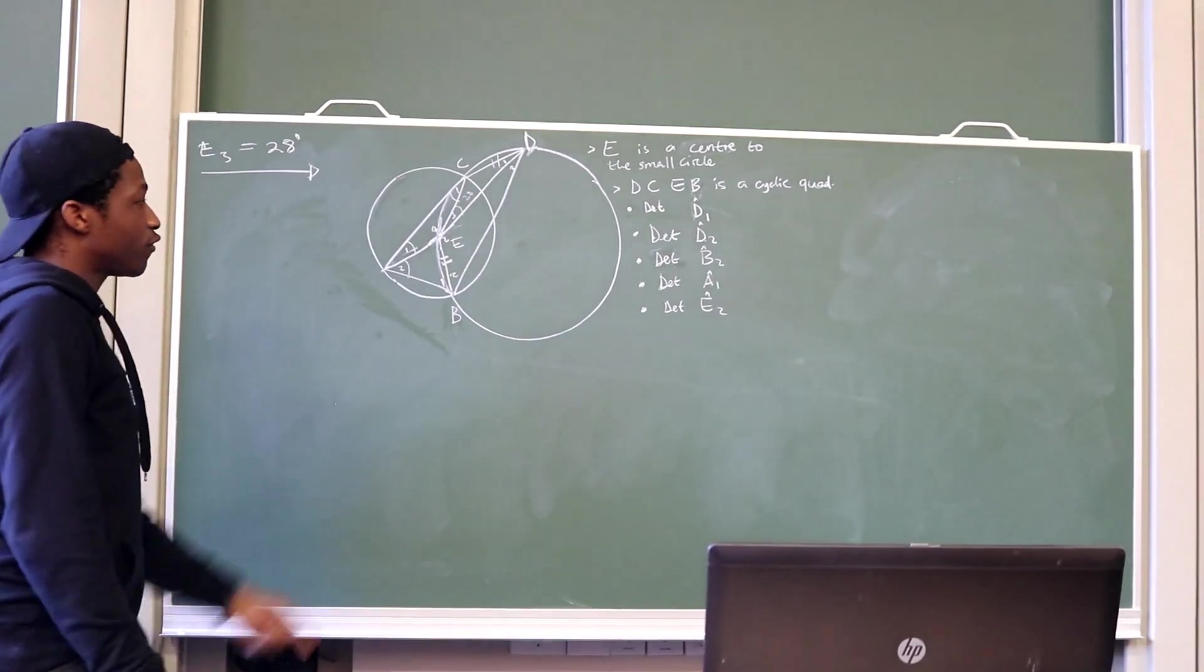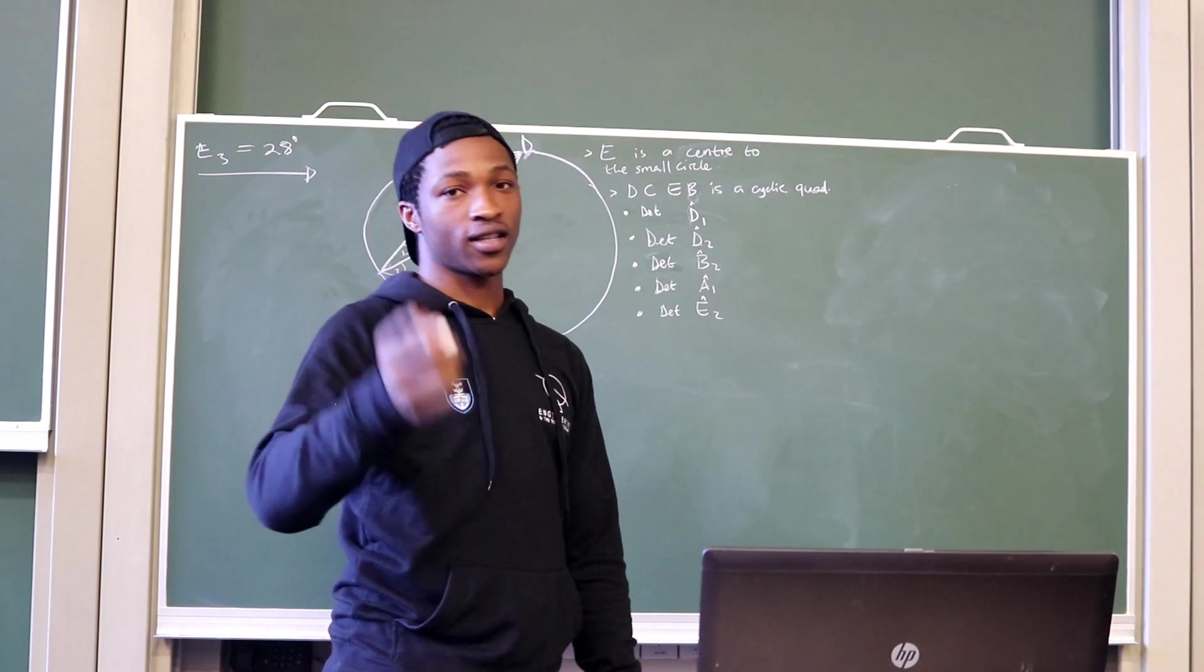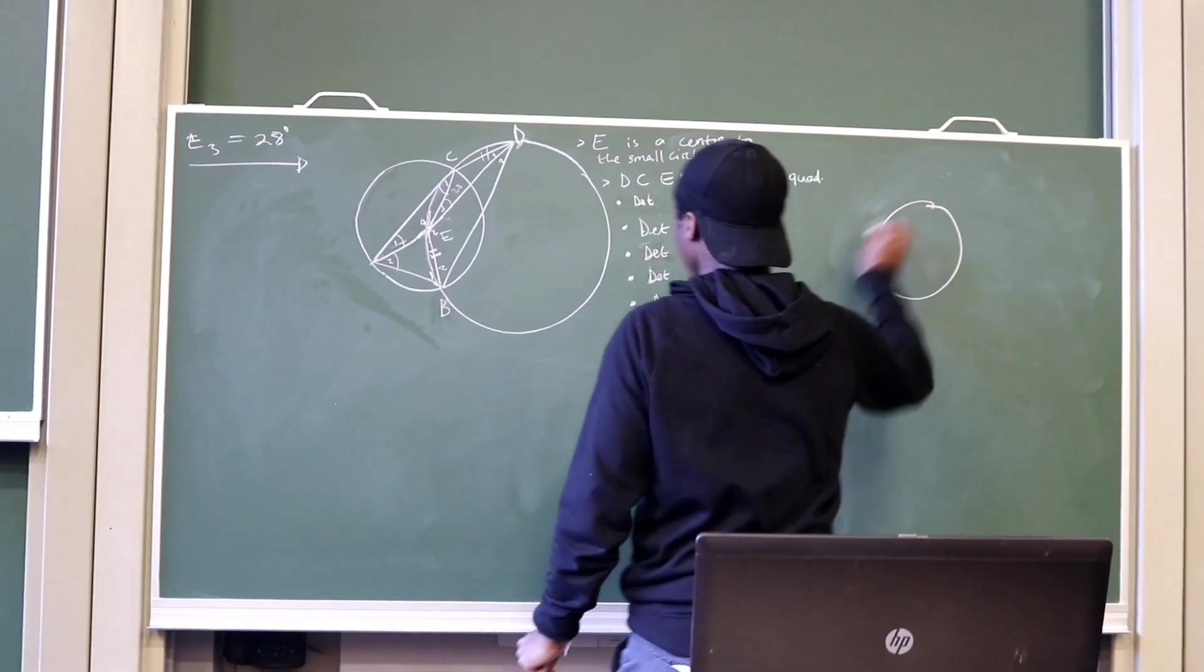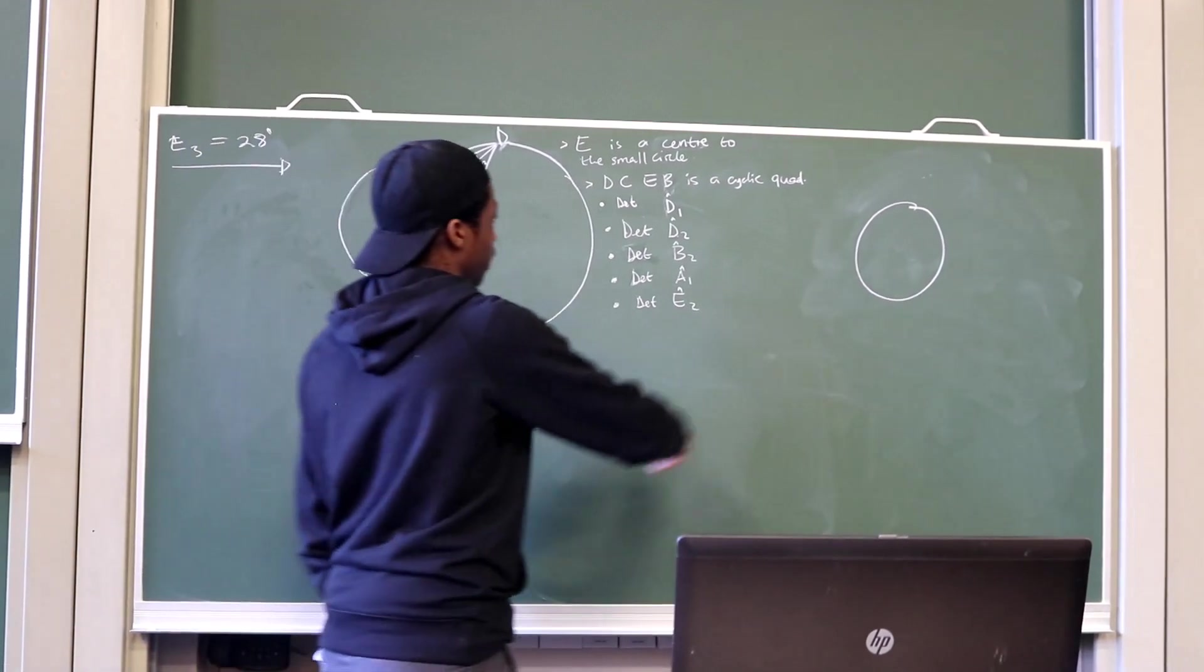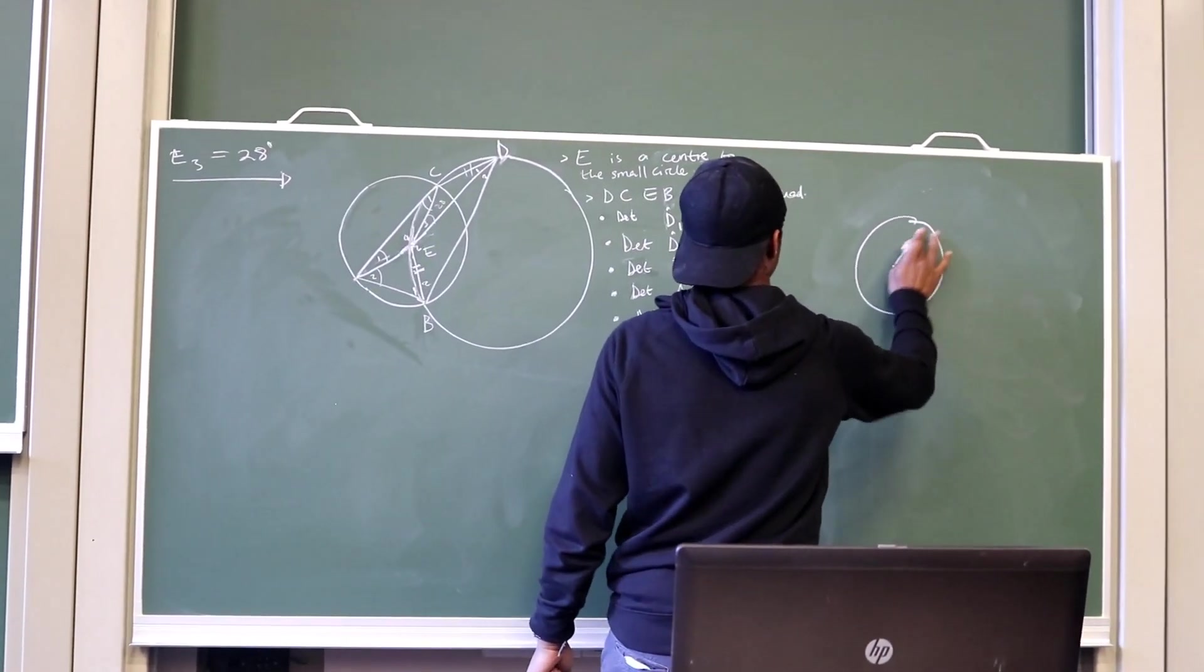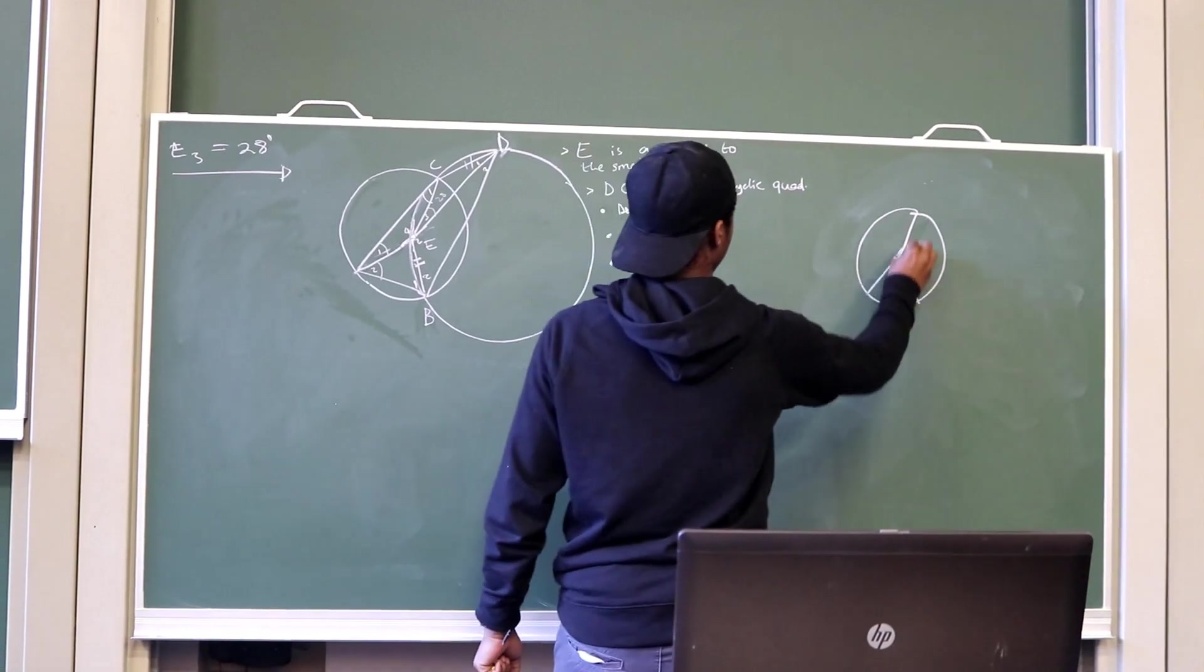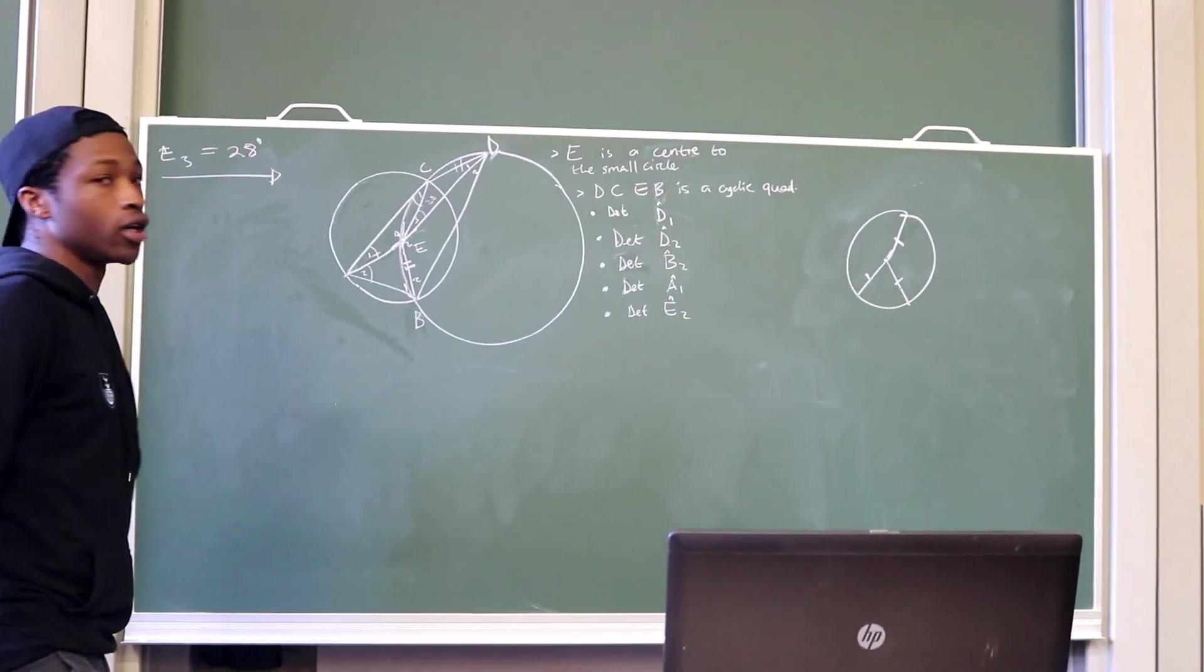Now, if we are told that E is the center, and we know that the line from the center to the circumference is a radius, then you need to unpack that. We've got three lines from the center to the circumference. We have this one, we have this one, we have this one. Meaning all these lines are equal because they are called radii.